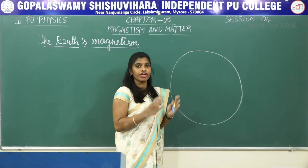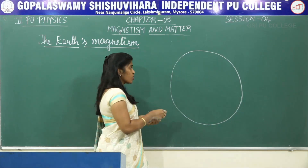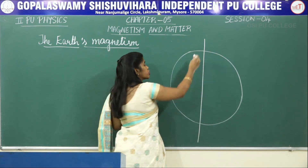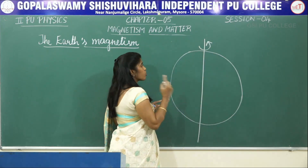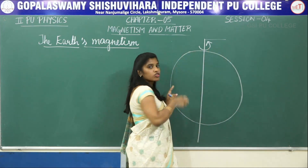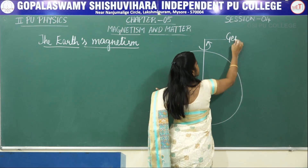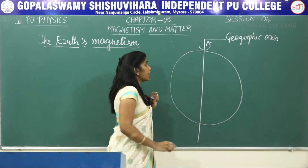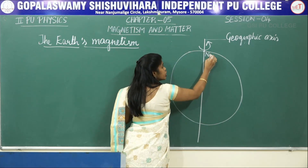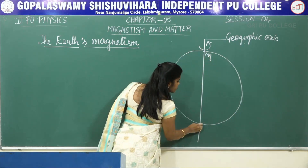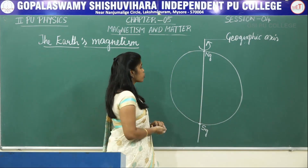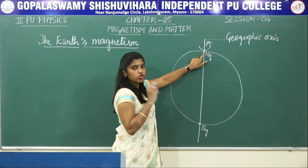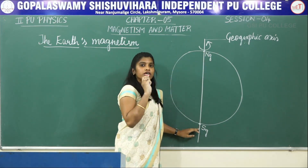Now let us see how the earth's magnetic field looks. If this is the earth, there is one axis of rotation, named the geographic axis. The pole at the top is called the geographic north pole (NG) and the bottom is the geographic south pole (ST). We can call this the geographic axis.